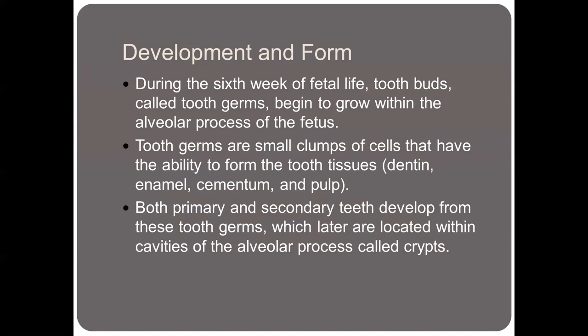During the sixth week of fetal life, you have tooth buds called tooth germs that begin to grow within the alveolar process of the fetus. These tooth germs are small clumps of cells that have the ability to form the tooth tissues, which include the enamel, the dentin, the cementum, and the pulp. Both primary and secondary teeth develop from these tooth germs, which are later located within the cavities of the alveolar process called crypts.